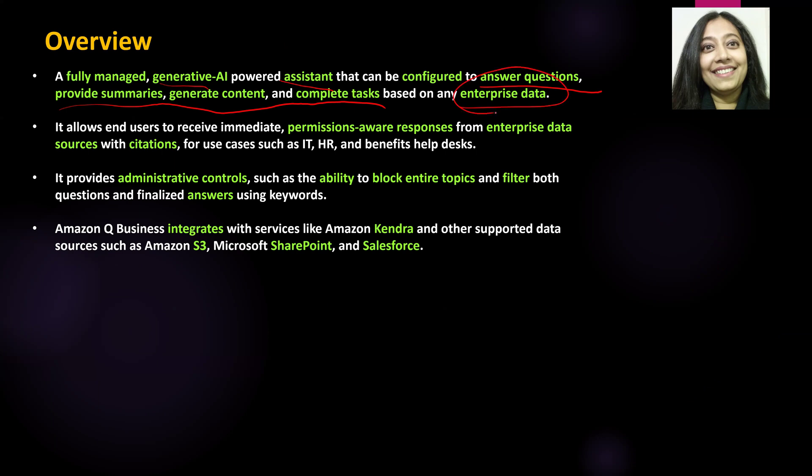Most enterprises and organizations will have a lot of documents, citations, Excel spreadsheets, PDFs, whole bunch of data sources, document repositories, and different types of data repositories. Along with all of this data, what they need is someone who can review through all this content, provide a summary, tell them what is relevant, what is not, what these documents are about, perhaps even generate some content or complete a task. And if they're looking for someone like that, Amazon Q Business is the answer.